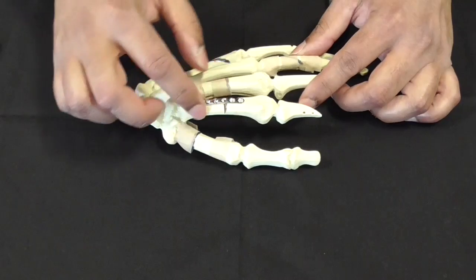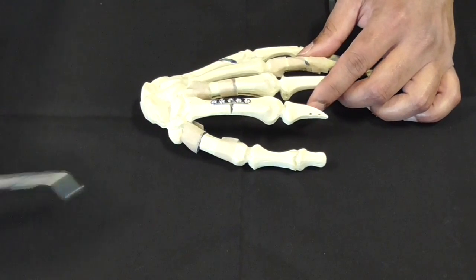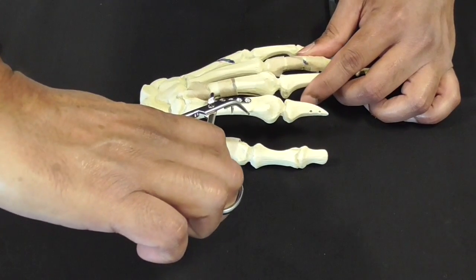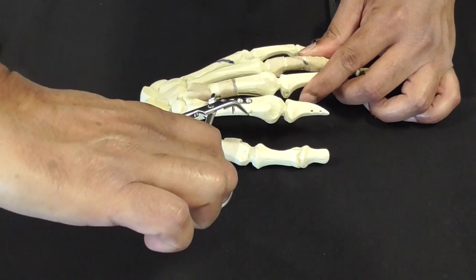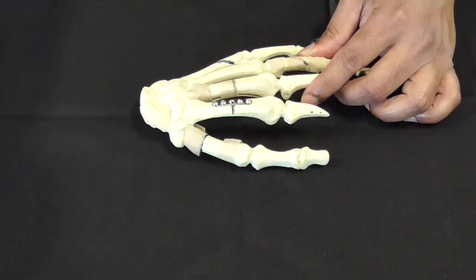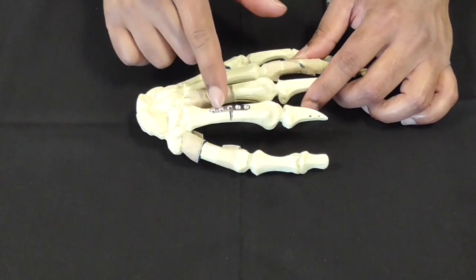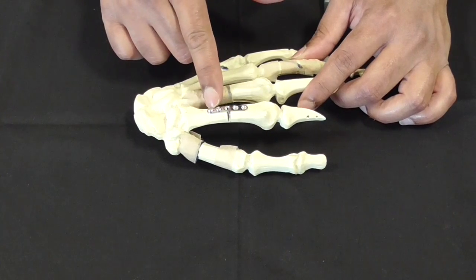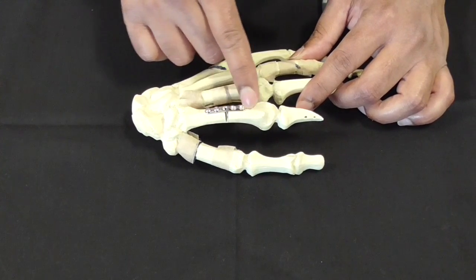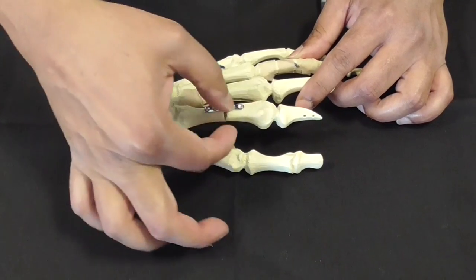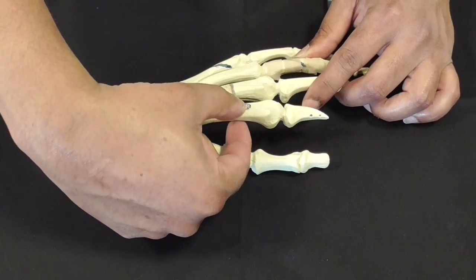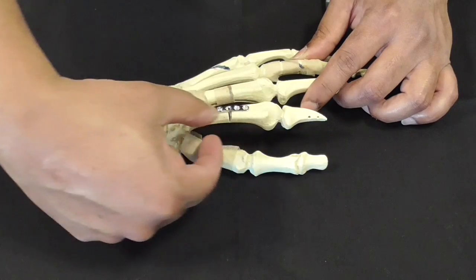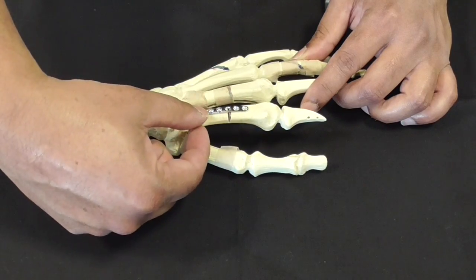If you've got a fracture like this which is transverse, unfortunately you can't use one of these because it just wouldn't work. One way of dealing with that is to put the plate on one side first and then use this as a cantilever, and then you stabilize the plate onto the bone.